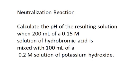This is an example of calculating the pH as the result of a neutralization reaction. Calculate the pH of the resulting solution when 200 milliliters of a 0.15 molar solution of hydrobromic acid is mixed with 100 milliliters of a 0.2 molar solution of potassium hydroxide.